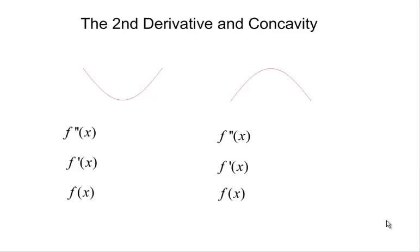Just as the first derivative tells us information about the behavior of our original function, the second derivative tells us information about our function as well. Instead of monotonicity — the increasing and decreasing behavior that the first derivative tells us about — the second derivative tells us about the concavity of our function.